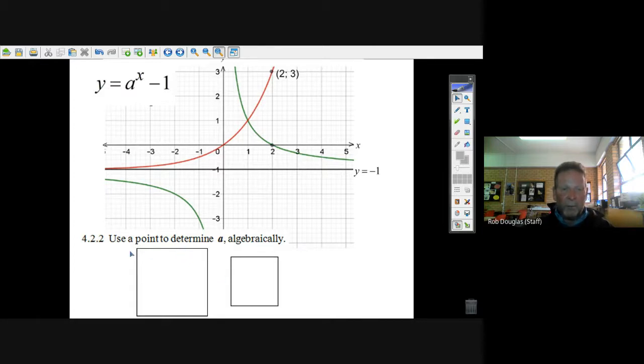We're going to try that. Use a point to determine a algebraically. Well, a point that's given in the picture. Well, this two is given for x, and this three is given for y. So two along and three, that fits into this exponential equation. So that's all you do.